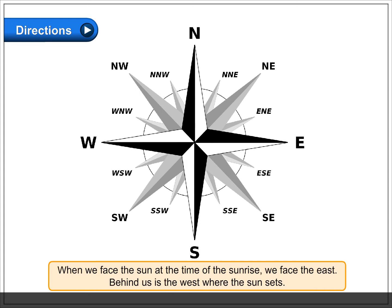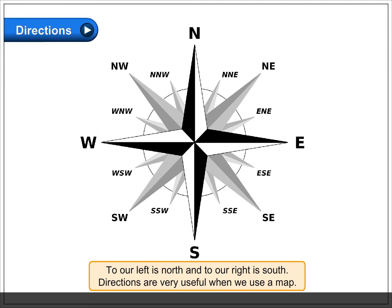When we face the sun at the time of sunrise, we face the east. Behind us is the west, where the sun sets. To our left is north and to our right is south. Directions are very useful when we use a map.